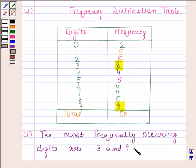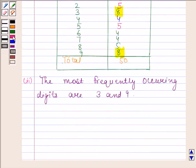Now we will find the least occurring digits. Frequency of 0 is lowest, that is 2. So this means the least occurring digit is 0.